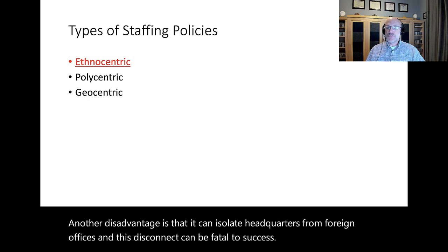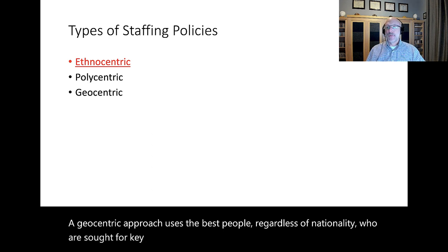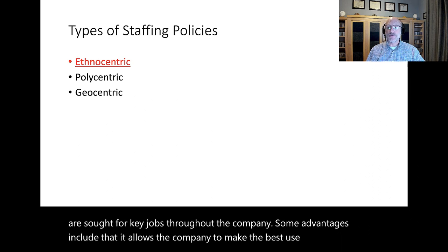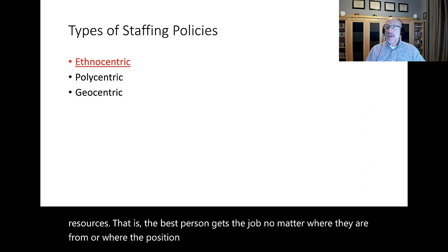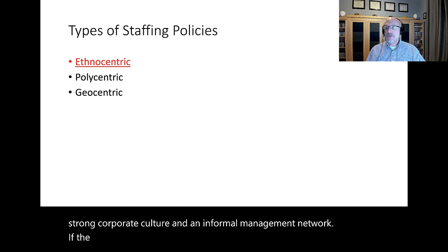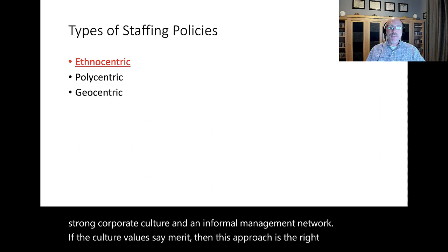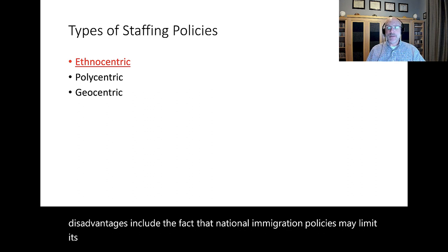A geocentric approach uses the best people regardless of nationality for key jobs throughout the company. Advantages include that it allows the company to make the best use of its human resources — the best person gets the job no matter where they are from or where the position is. Another advantage is that it helps build a strong corporate culture and an informal management network. If the culture values merit, then this approach is the right one. Disadvantages include that national immigration policies may limit its implementation and it may be expensive to implement.